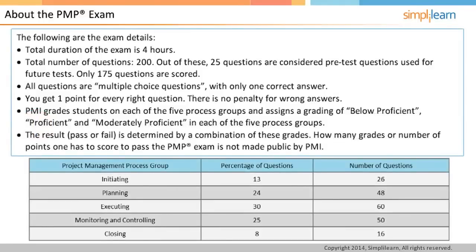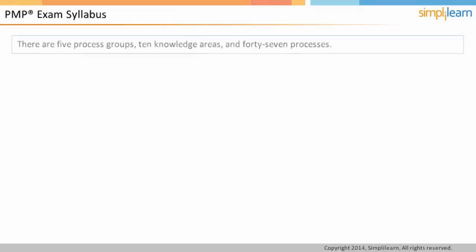Let us next discuss the PMP exam syllabus. There are five process groups, ten knowledge areas, and 47 project management processes. To understand the syllabus, you need to understand the following terms: process groups, knowledge areas, and processes.